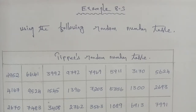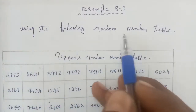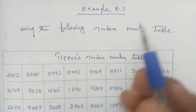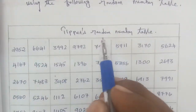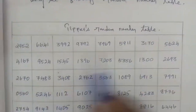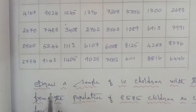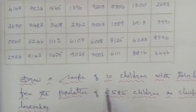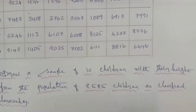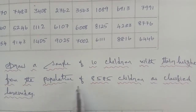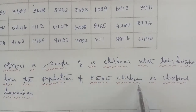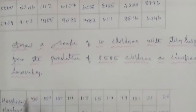Hi students. This is 12th Business Maths, Example 8.3. Using the following random number table, we will take a random number table. Draw a sample of 10 children with their height from the population of 8,585 children as classified here.